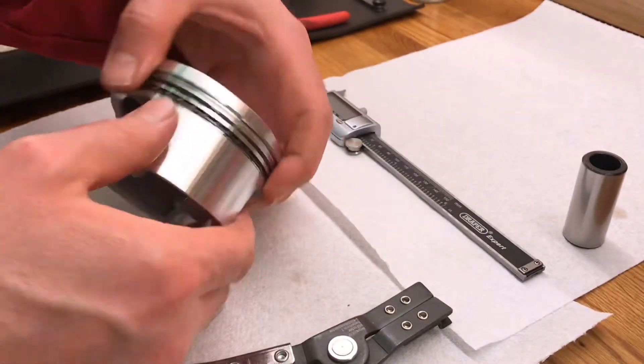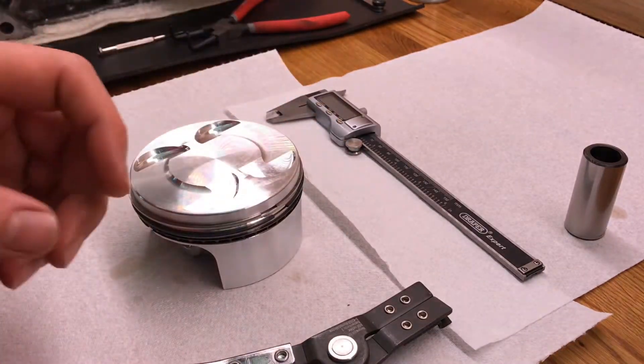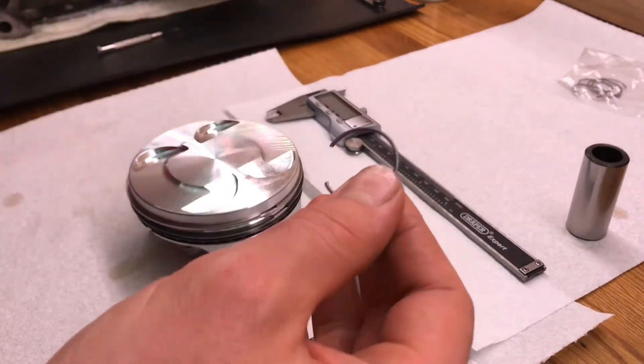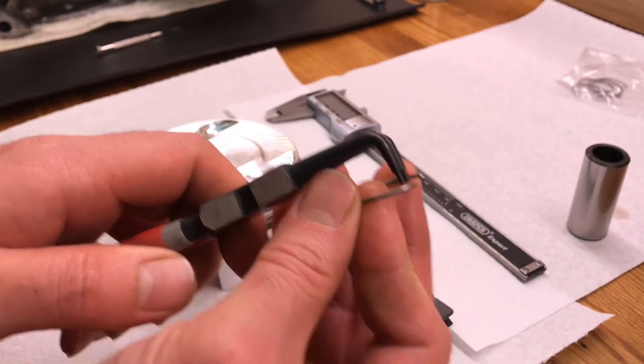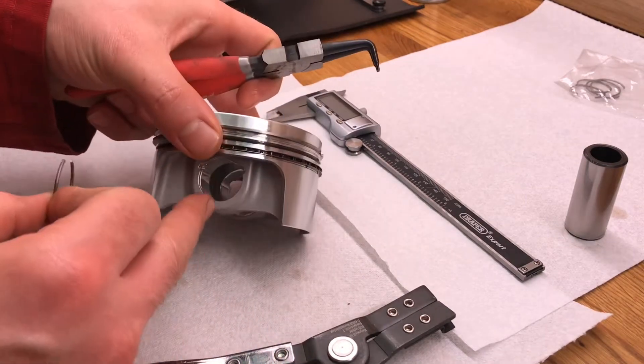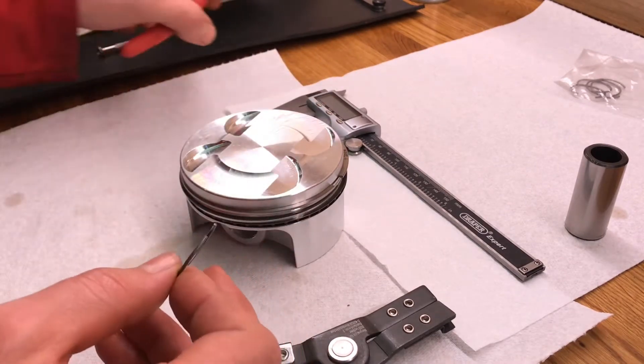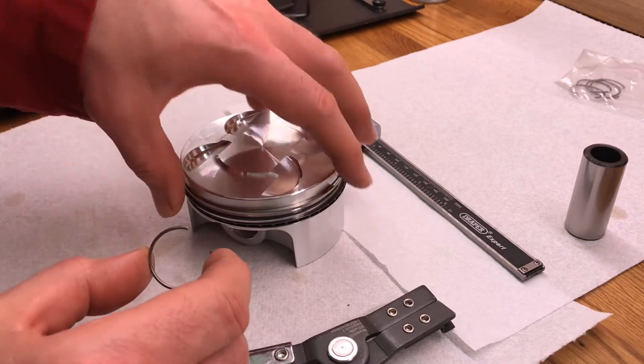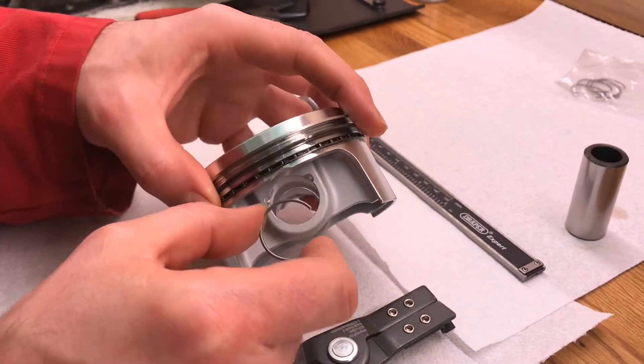So now we've got to put in the piston pin circlip. Now these clips on these pistons, normally you would have two little holes in it so you could put an instrument like this in and squeeze it. So you could put this in and squeeze it shut to get it in the hole. So this needs to go in this hole here to stop the pin falling out. But these are super tough and these are made to make sure they don't come out. Because of that, they're really hard to get in.